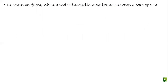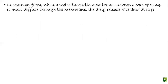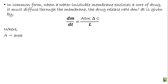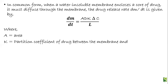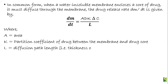In the common form, when a water-insoluble membrane encloses a core of the drug, it must diffuse through the membrane. The drug release rate, dM/dt, is given as: dM/dt = ADK·ΔC/L, where A is the area available for diffusion, K is the partition coefficient of the drug between the membrane and the core, L is the diffusion path length (i.e., thickness of the polymeric membrane coat), and ΔC is the concentration gradient or concentration difference across the membrane.